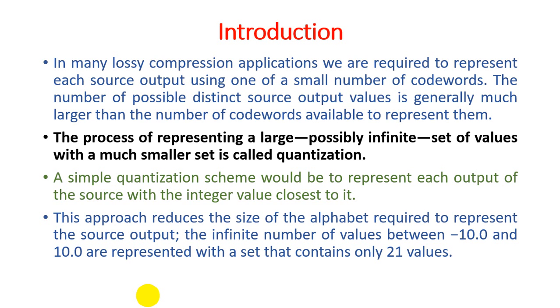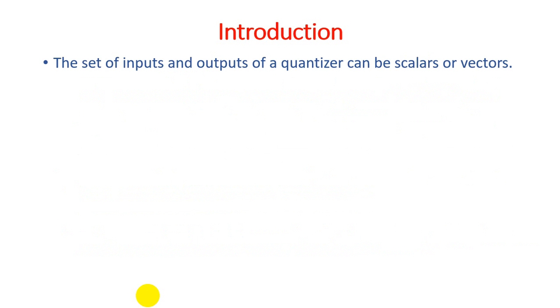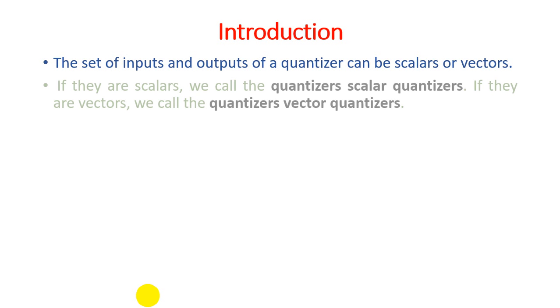The set of input and output of a quantizer can be scalar or may be a vector. Scalar means it may be the same size, or may be a vector according to the situation. Scalar means all sizes are the same; vector means size depends on your input value. If they are scalar, we call the quantizer a scalar quantizer. If they are vectors, we call the quantizer a vector quantizer.